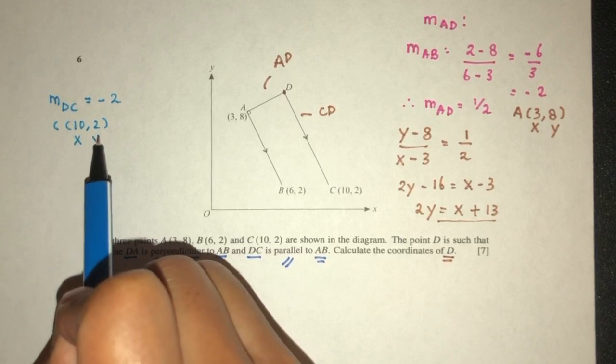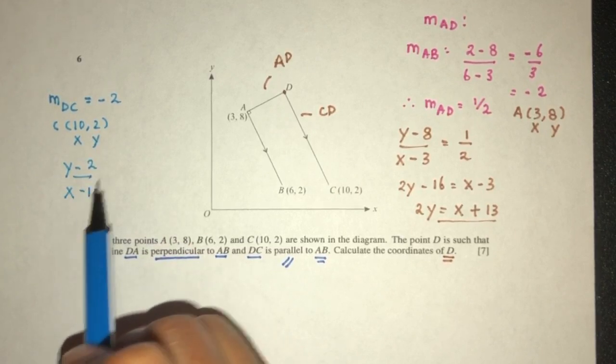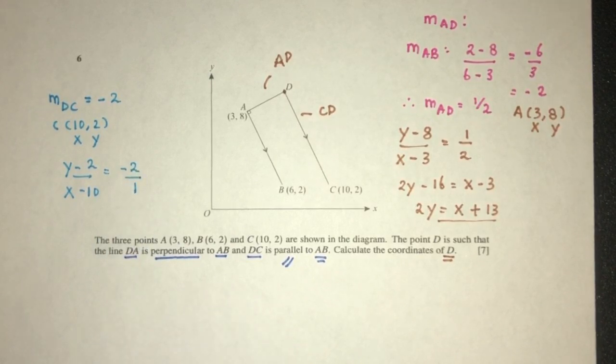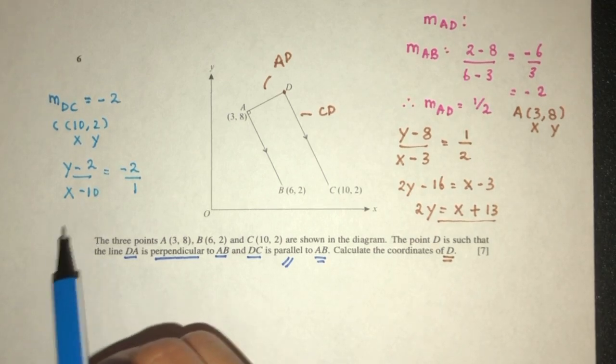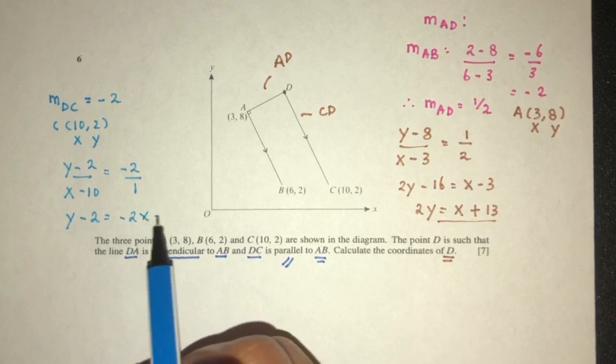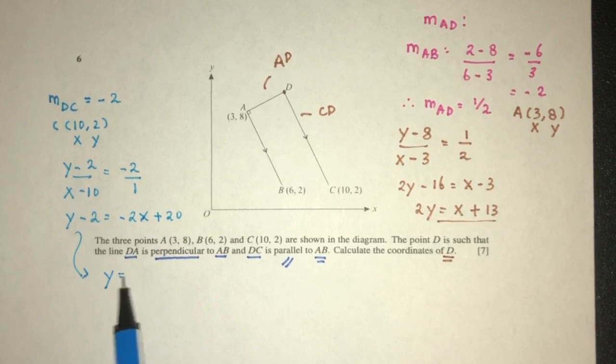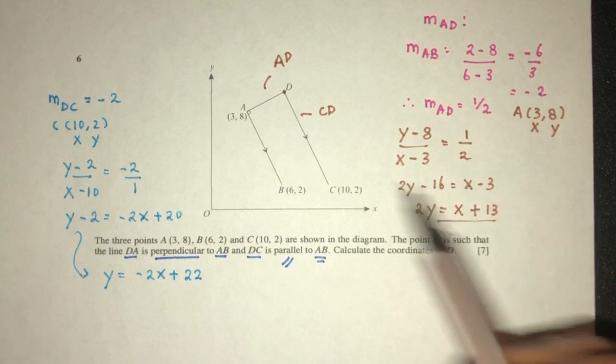Now, passing point here, we have C as the passing point, which is 10, 2. This is the X value and the Y value. So Y minus 2 over X minus 10, that should be minus 2 over 1. This is just a method that I use to find the equation of a straight line. If you have something else, you can use your own method. Cross multiply, you have Y minus 2 equals minus 2X plus 20. Y equals minus 2X plus 22. This is my equation for the line DC.